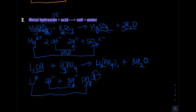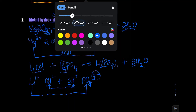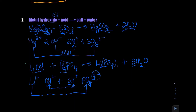The three H⁺ ions each bond with an OH⁻, forming three water molecules. Now let's balance: one lithium on the left and three on the right, so put 3 in front of LiOH. Three oxygens on each side (excluding PO₄). Hydrogens: three from LiOH plus three from H₃PO₄ makes six, and six hydrogens in the three water molecules. One PO₄ on each side. The equation is balanced.